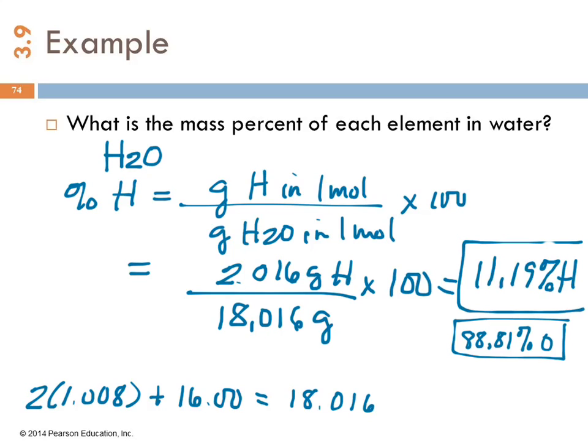So you should be able to find the percent composition of a compound given its name, because we just learned how to write formulas from names. So you can write the formula, and the formula is the ticket to finding the mass percent.